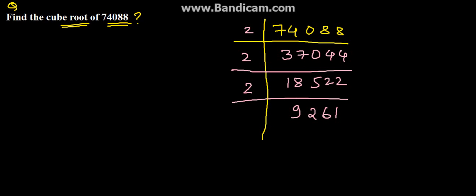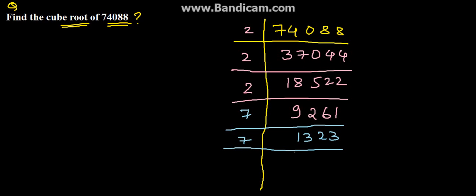Now we cannot divide 9261 by 2 further. Let us see which is the smallest number we can divide by — not 3, not 4, not 5, not 6 — yes, 7 we can divide. Dividing it by 7 we will get 1323. Again dividing by 7 we will get 189, and again by 7 we will get 27.